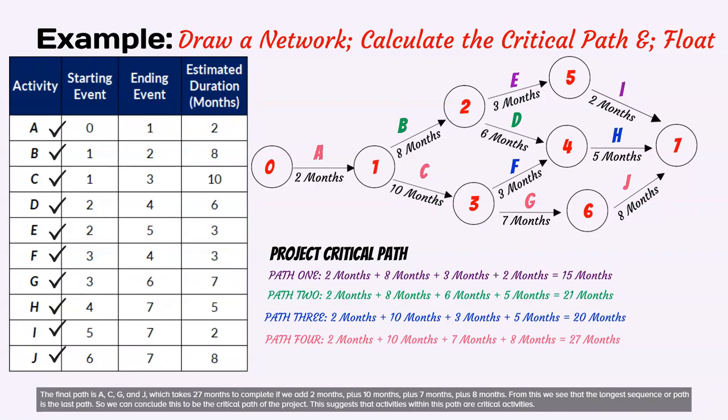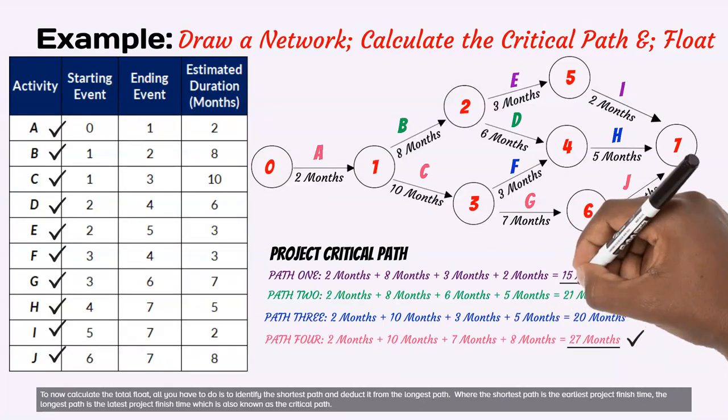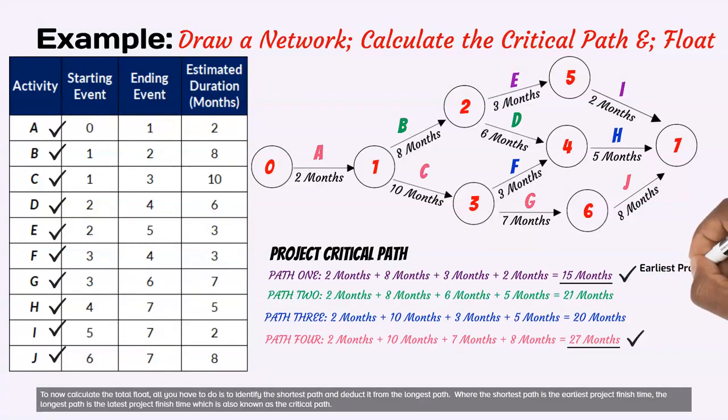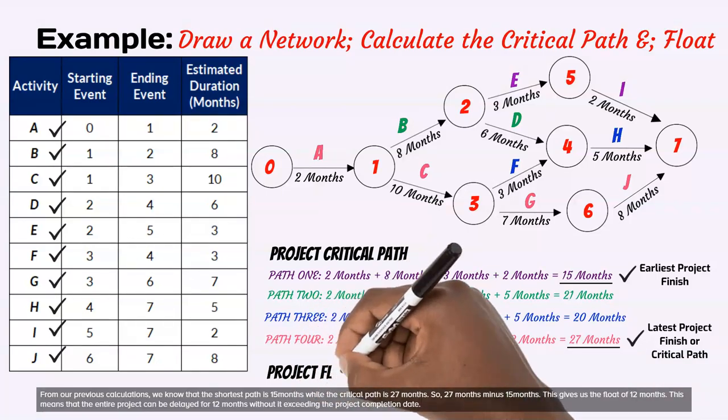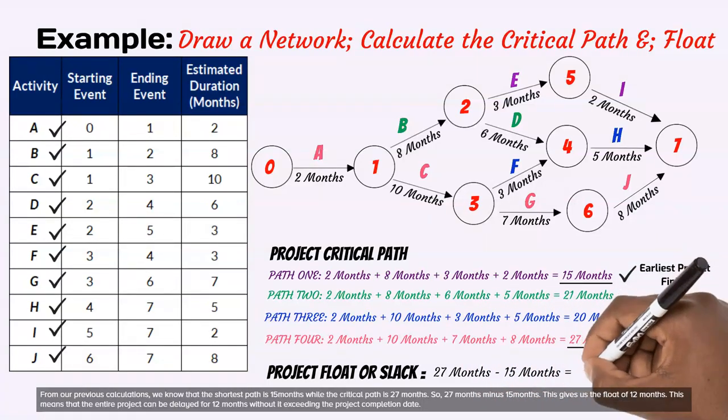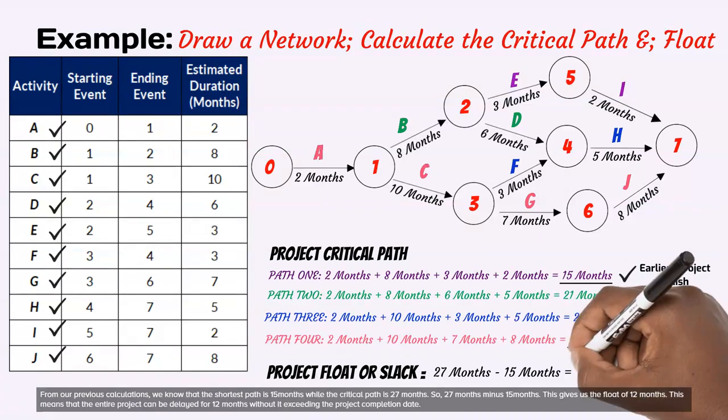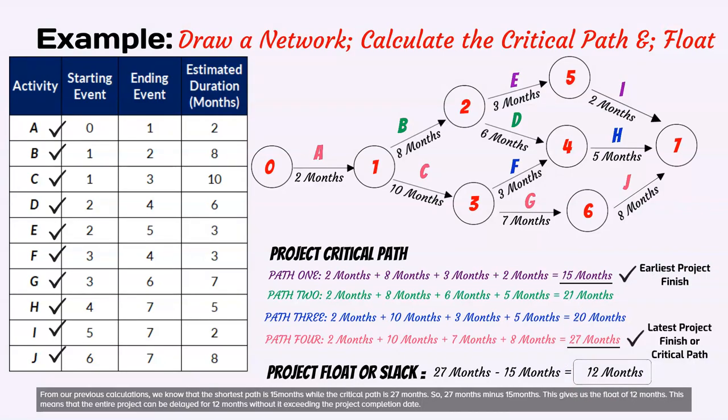From this we see that the longest sequence or path is the last path. So we can conclude this to be the critical path of the project. This suggests that activities within this path are critical activities. To now calculate the total float, all you have to do is identify the shortest path and deduct it from the longest path. Where the shortest path is the earliest project finish time, the longest path is the latest project finish time which is also known as the critical path. From our previous calculations, we know that the shortest path is 15 months while the critical path is 27 months. So, 27 months minus 15 months. This gives us the float of 12 months. This means that the entire project can be delayed for 12 months without it exceeding the project completion date.